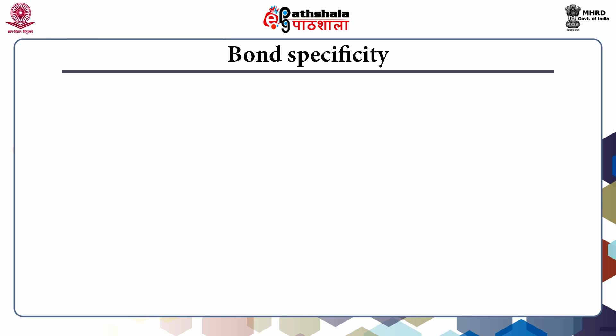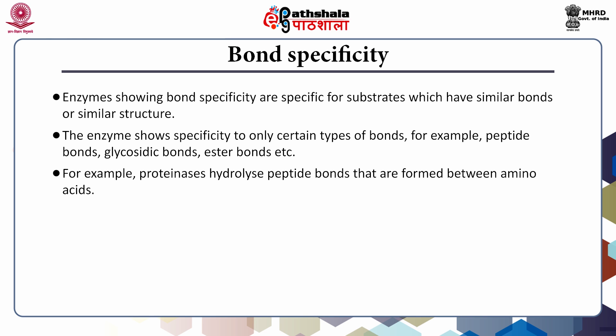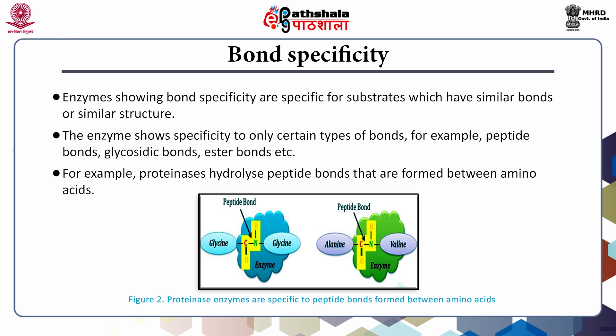Bond specificity: Enzymes showing this specificity are specific for substrates which have similar bonds or similar structure. The enzyme shows specificity to only certain types of bonds, for example peptide bonds, glycosidic bonds, ester bonds, etc. For instance, alpha-amylase enzyme hydrolyzes the alpha-1,4 linkage in the glycosidic bonds of carbohydrates. Lipases hydrolyze the ester linkages between a glycerol and a fatty acid. Proteinases hydrolyze the peptide bonds formed between amino acids. The figure shows how proteinase enzymes are specific to peptide bonds. Bond specificity is also known as relative specificity.